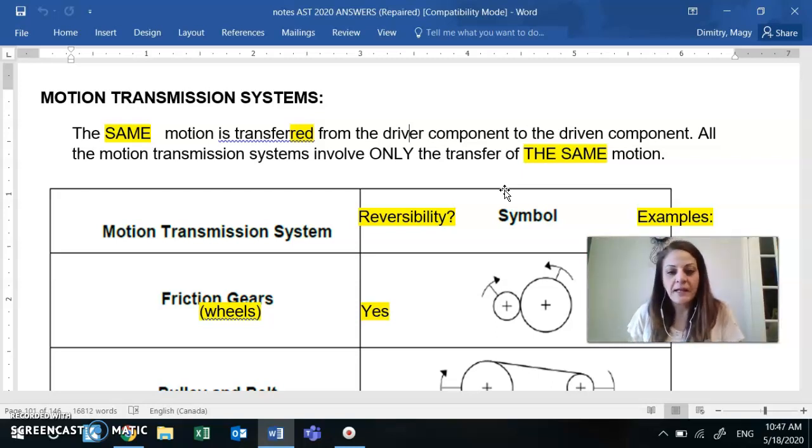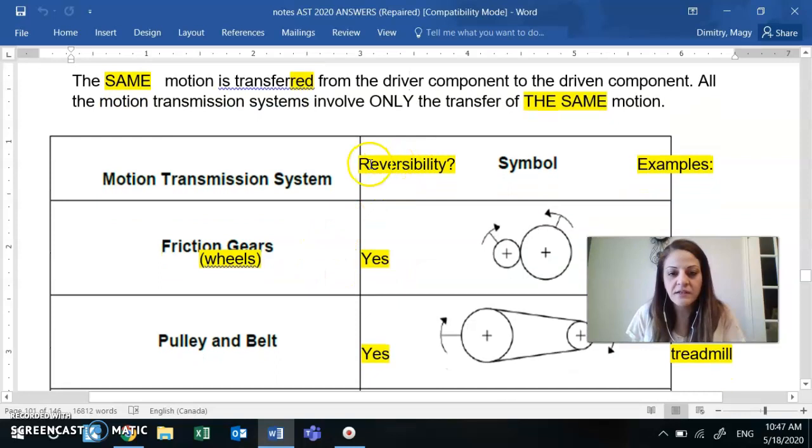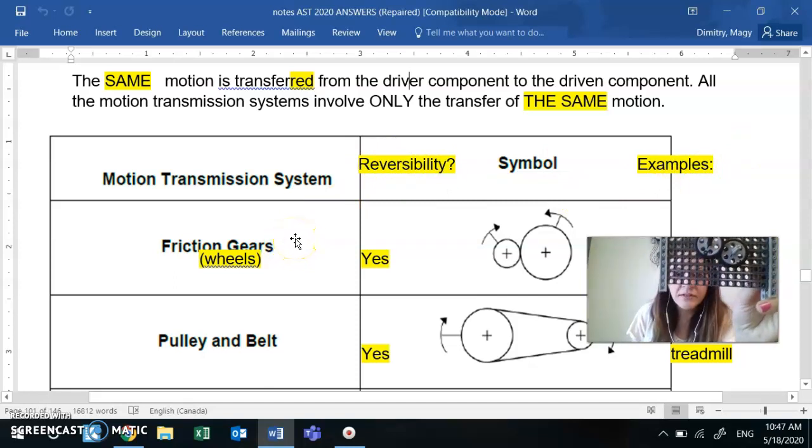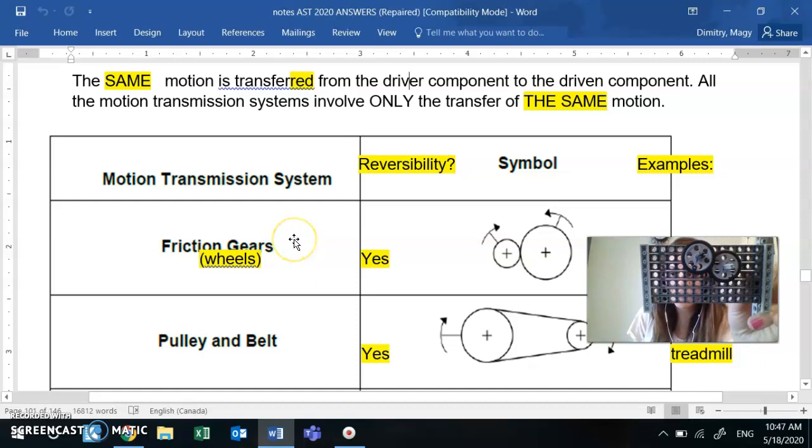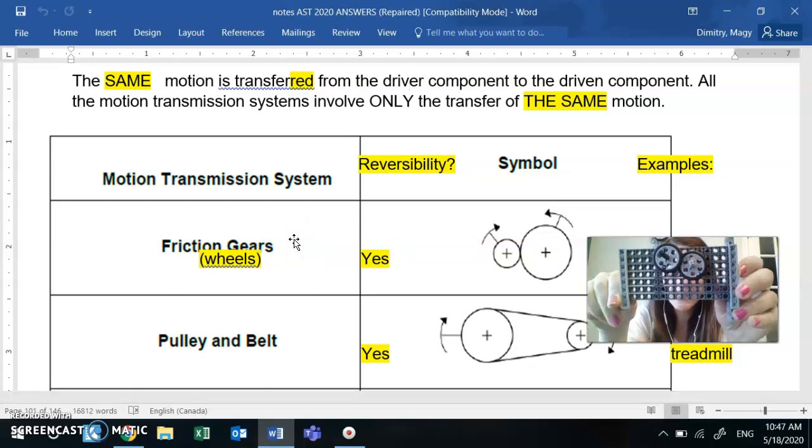I'd like you to add, you see in yellow, I added a small column called reversibility and some examples. So the first one here I'm going to show you again, we call this the friction gears or friction wheels. You might hear these two terms.